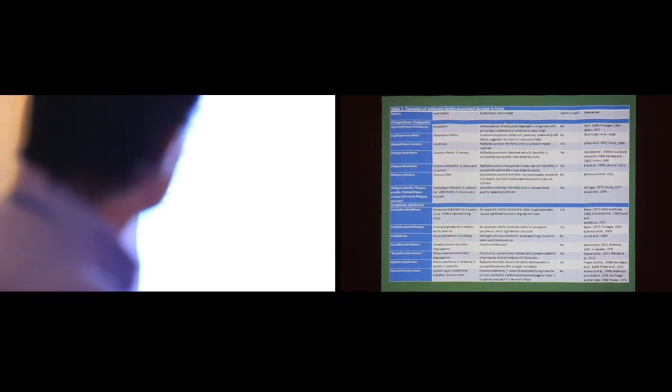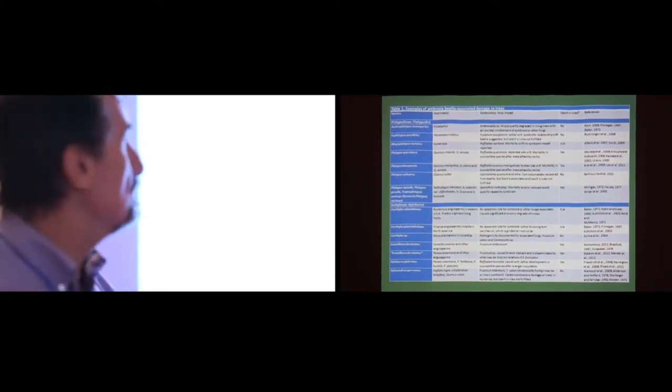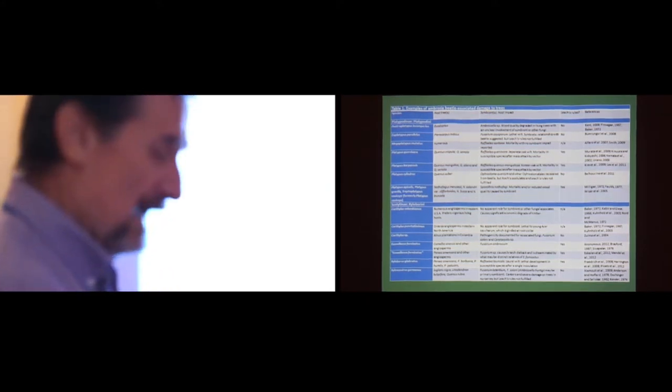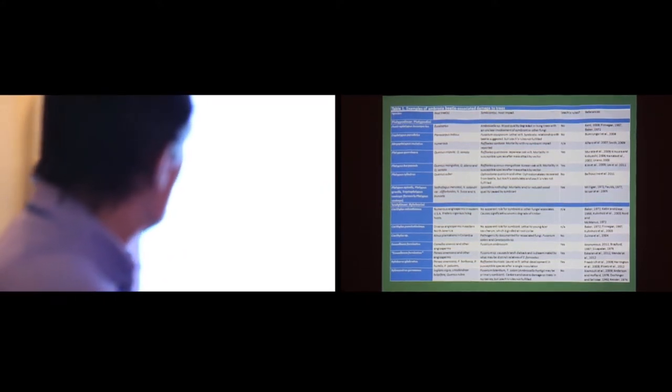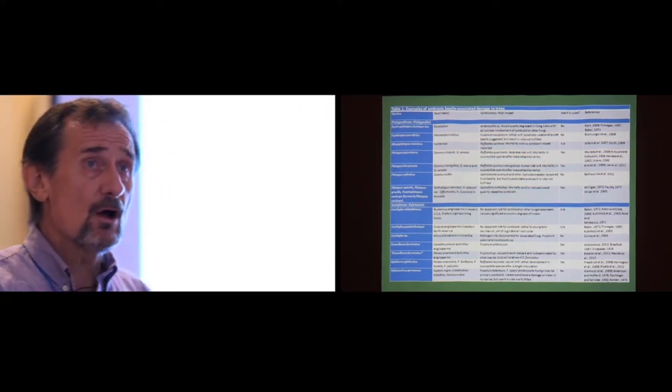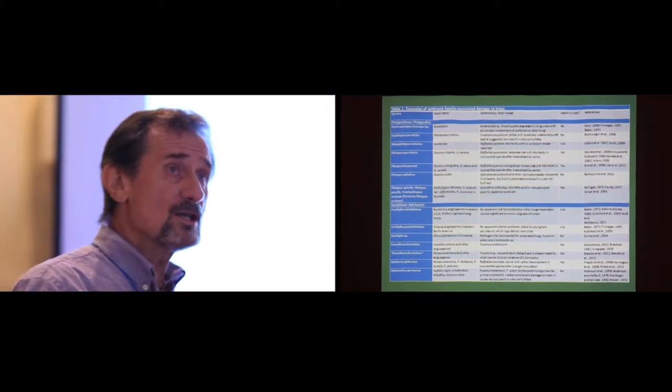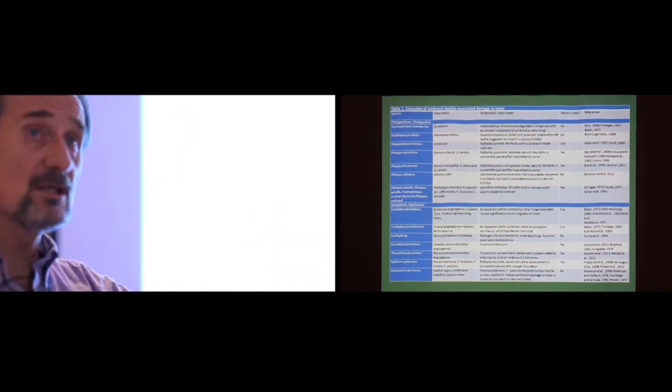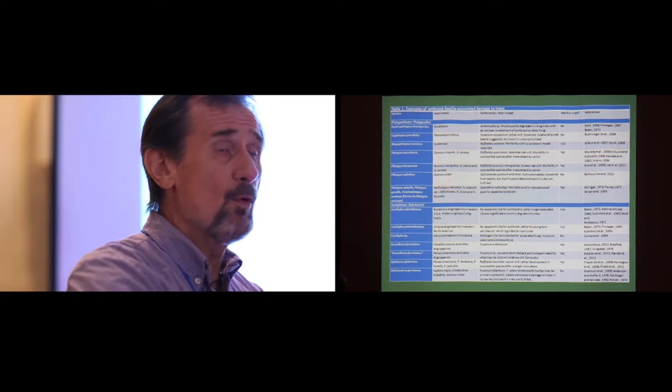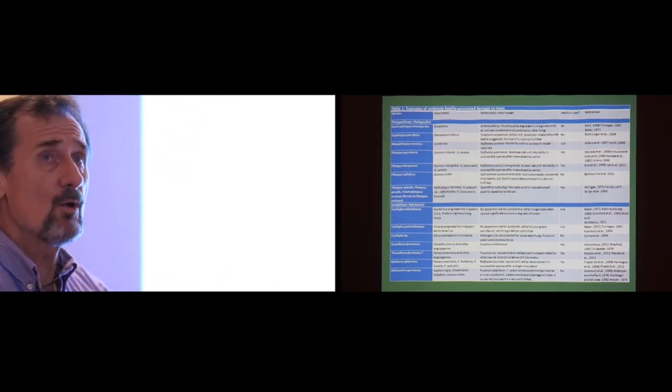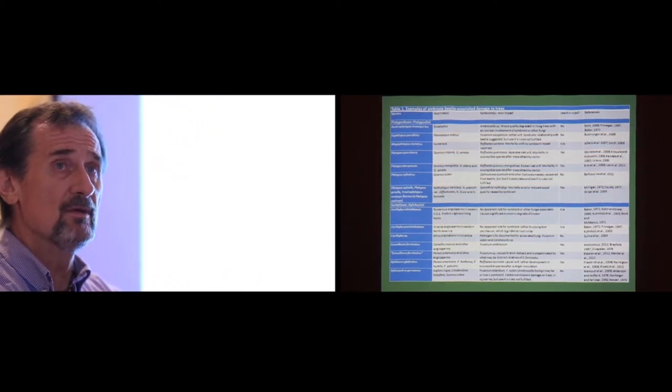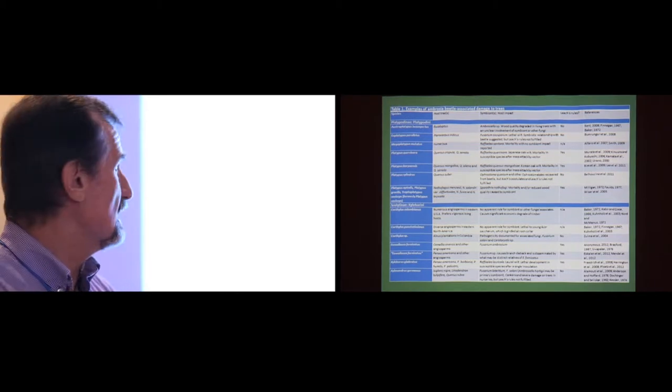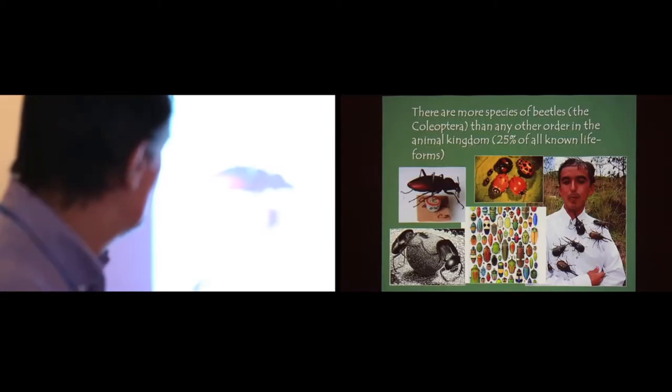For some of these situations, up here there's a eucalyptus situation, ambrosialis is the symbiont, there's not good information that that thing causes any damage at all. However, for a lot of these here, there's very good information that the damage that's caused on these hosts is caused not just by the fungus and not just by the beetle, but this combination. That's very important. In most of these situations, you need that tag team to kill trees and do serious damage.